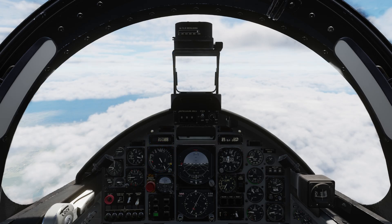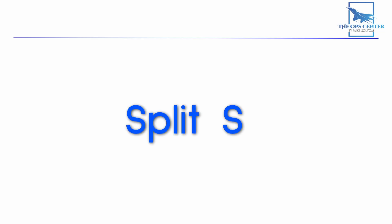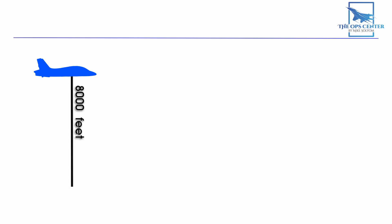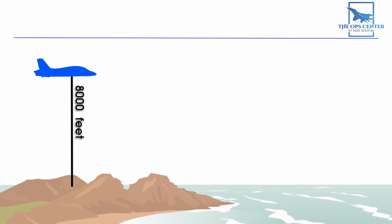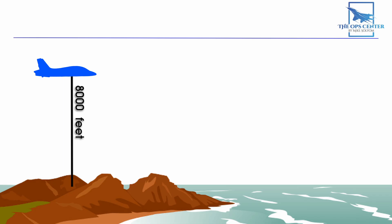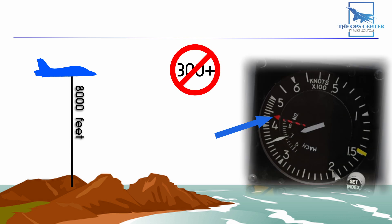The downward counterpart to the Immelman is known as the Split S. Just like the Immelman, you maneuver in the vertical plane and end up on the reciprocal heading — only this time you'll be diving instead of climbing. Two important considerations that didn't apply to the Immelman: first, starting altitude — since we don't want to hit the ground, start at 8,000 feet and make sure there are no mountains below. Second, don't begin this maneuver going too fast. As we dive we gain speed, and starting above 300 knots makes it very easy to reach the never-exceed speed on the airspeed indicator. Going over that speed makes the aircraft very unresponsive, which you don't want in a dive.